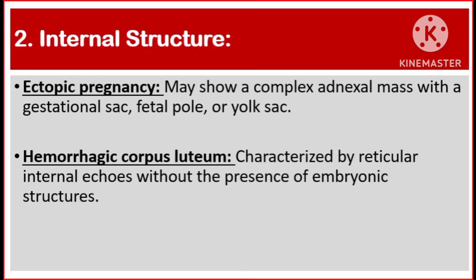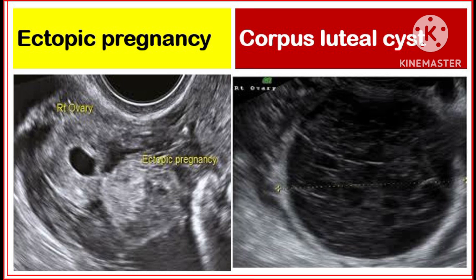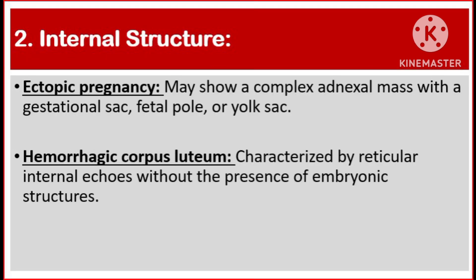Number two, internal structure. Ectopic pregnancy may show a complex adnexal mass with a gestational sac, fetal pole, or yolk sac. But hemorrhagic corpus luteum is characterized by reticular internal echoes without the presence of embryonic structures.